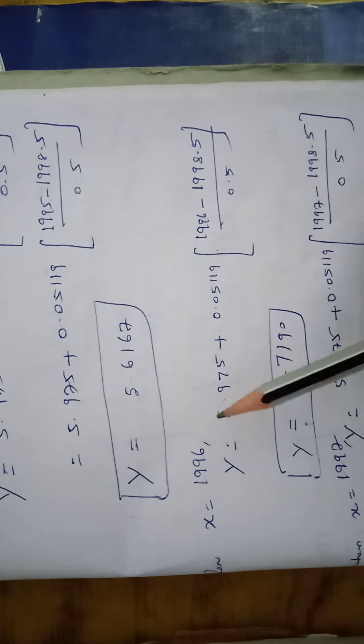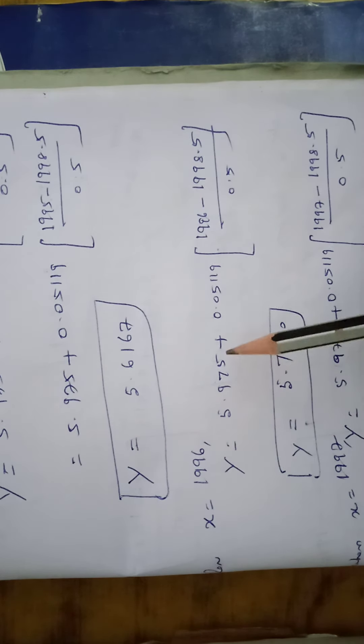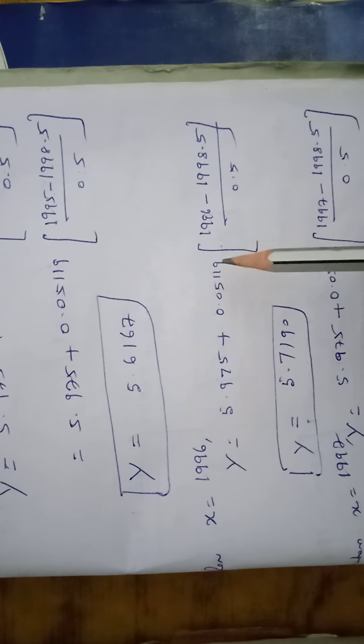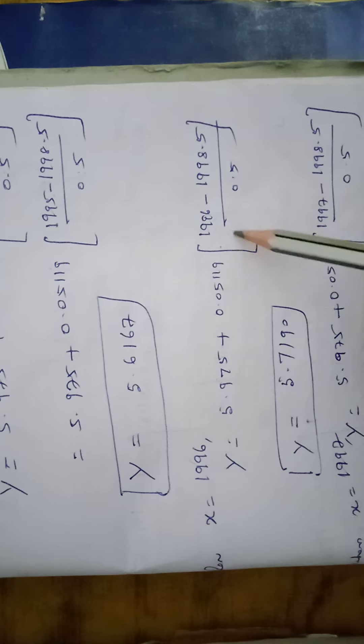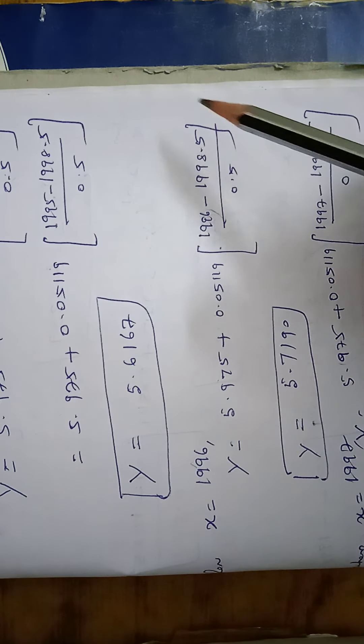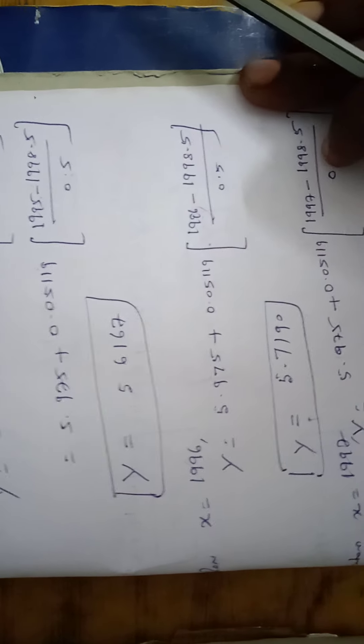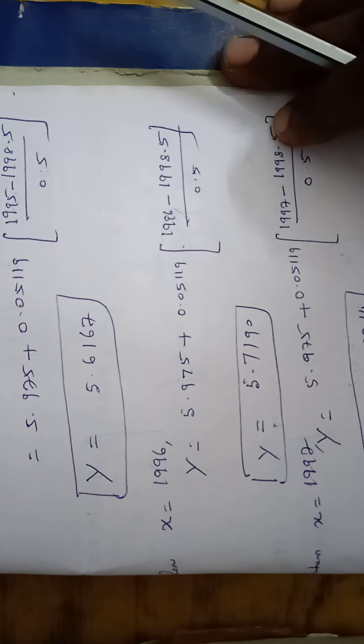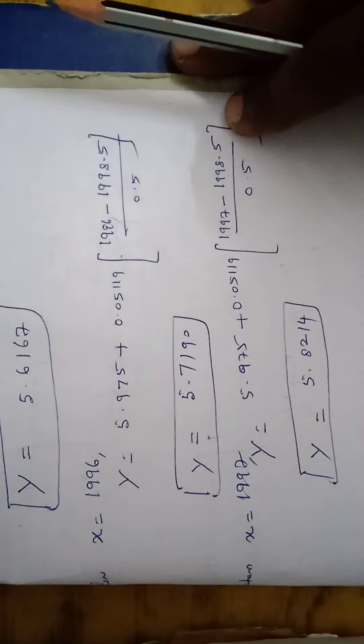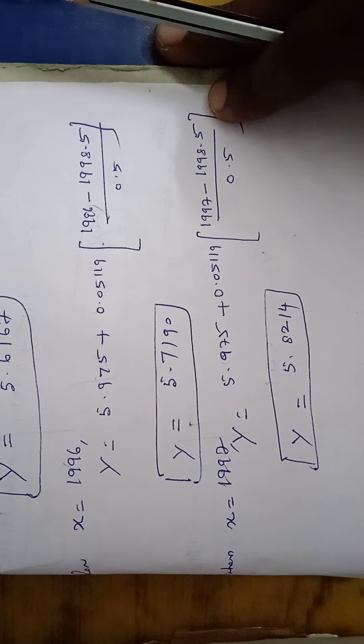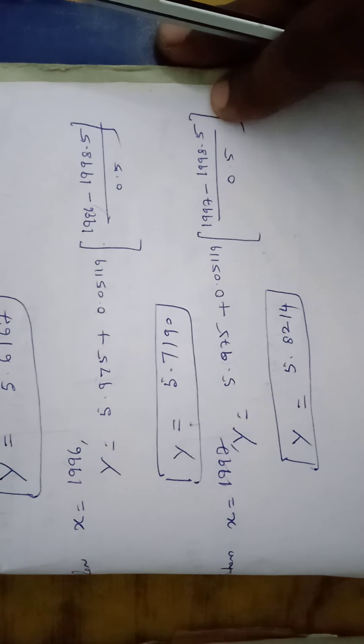Similarly X equal to 1996. Y equal to 5.975 plus 0.05119 into the corresponding year can be put into the place 1996 minus 1998.5 by 0.5. Answer is Y equal to 5.7190. Similar manner in the year 1997 Y values 5.8214.